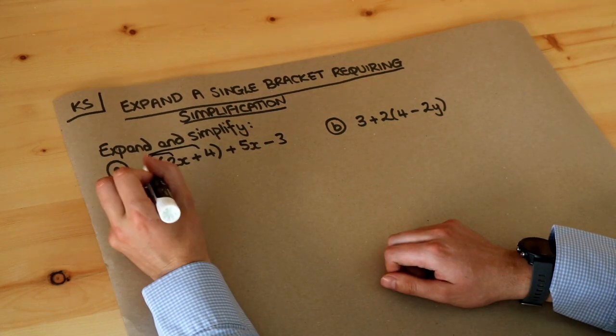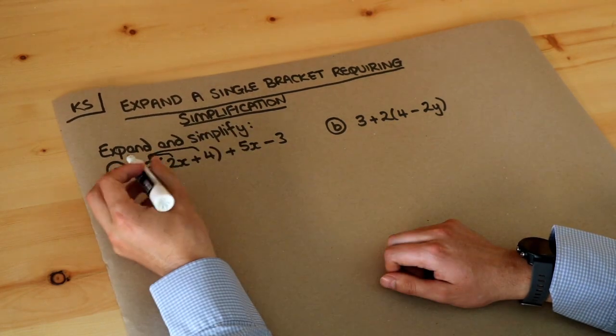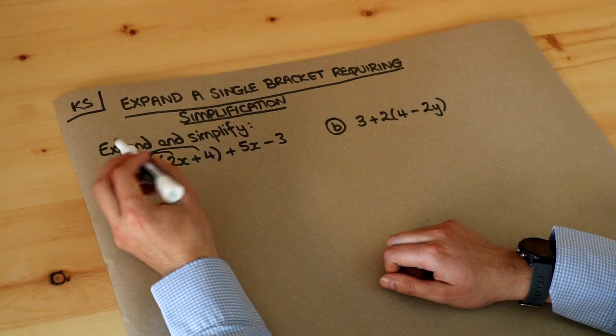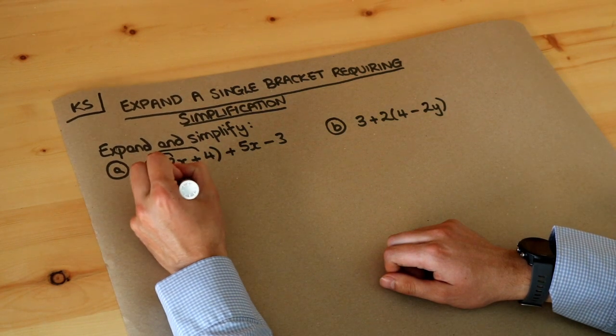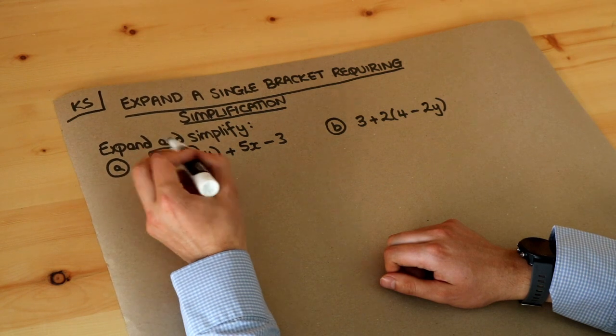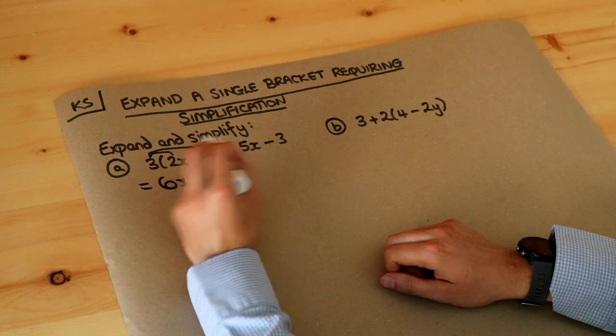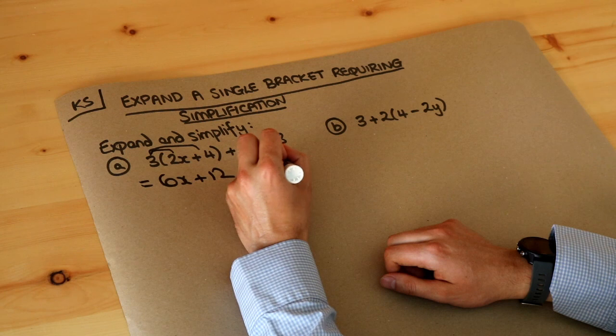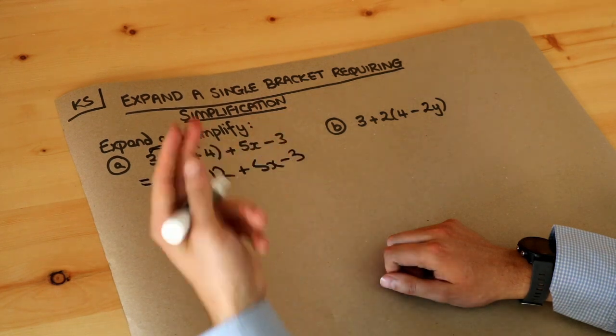So if we do that and we'll leave these terms here as they are, the 3 gets multiplied by 2x, 3 lots of 2x is 6 lots of x and 3 times 4 is plus 12 and we've still got the plus 5x and the minus 3 just minding its own business that's not being expanded out from somewhere.